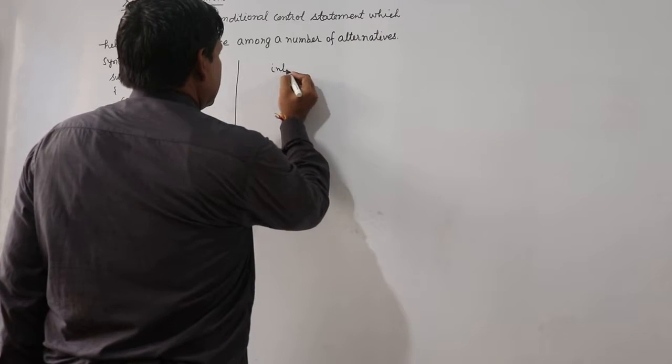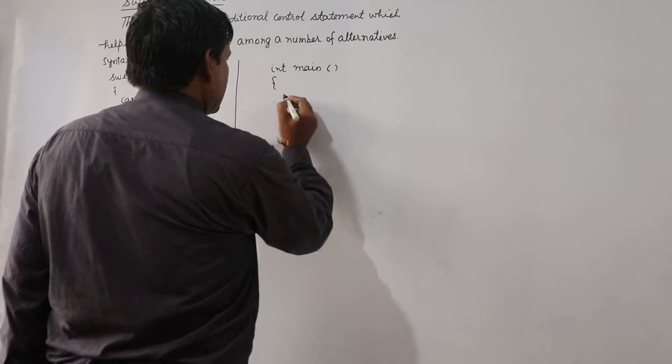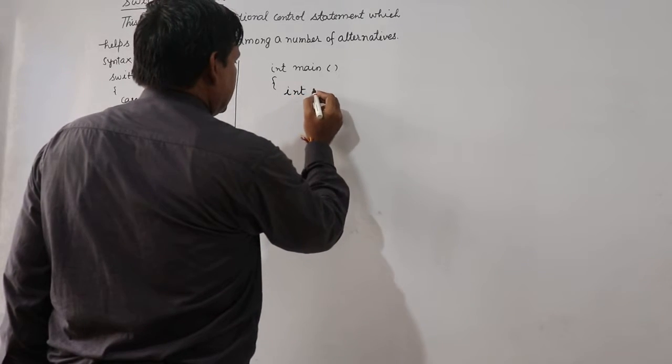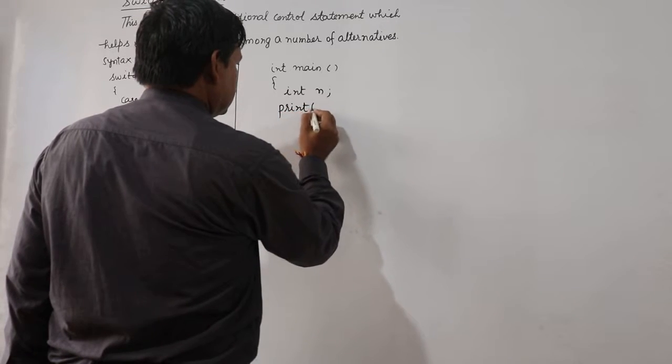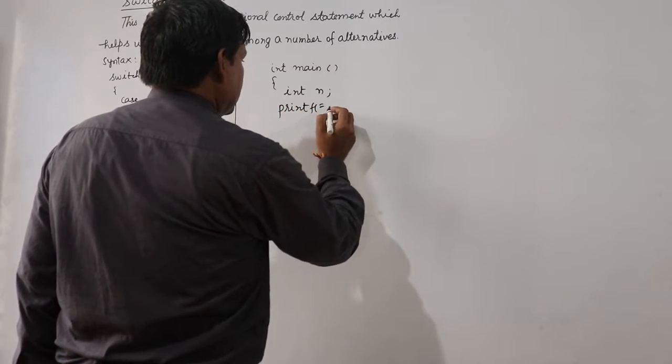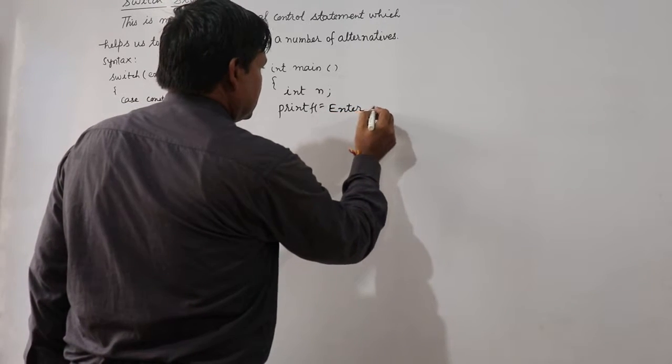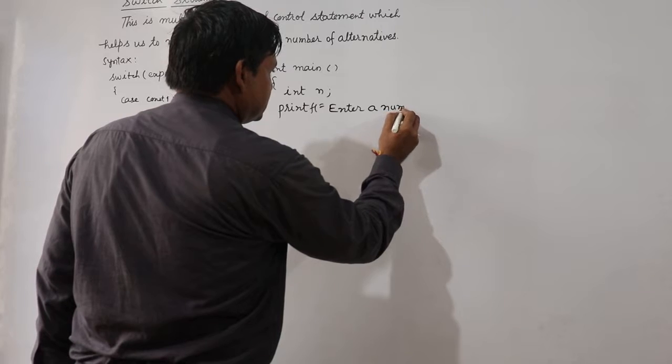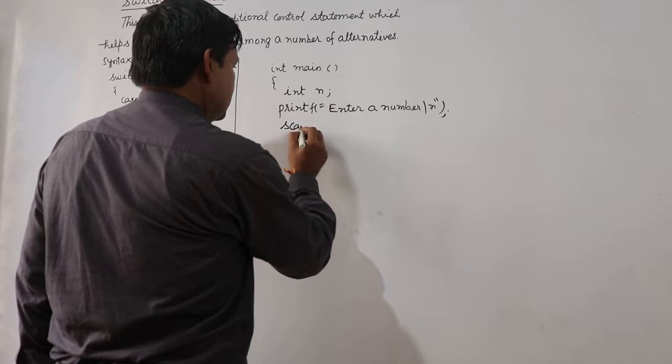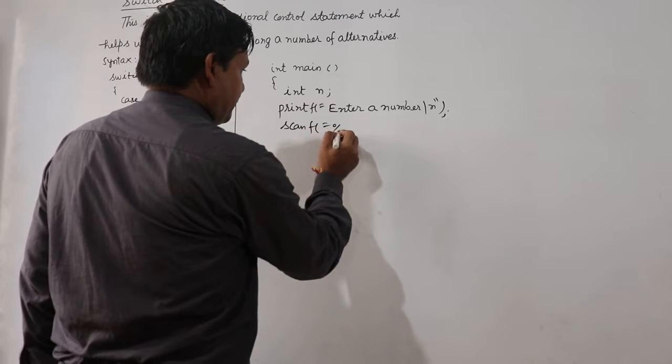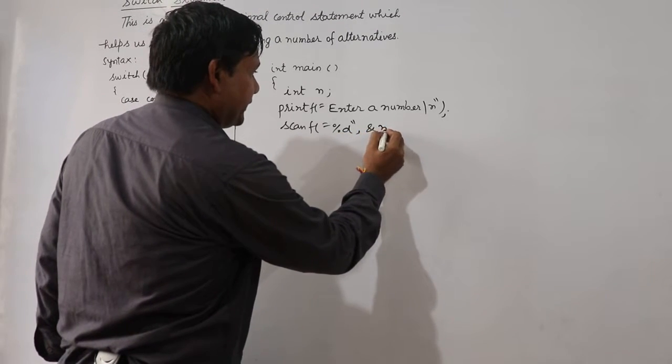Here int main, int n, printf enter a number, scanf percent d, ampersand n.